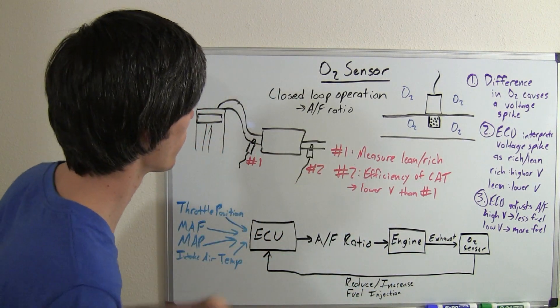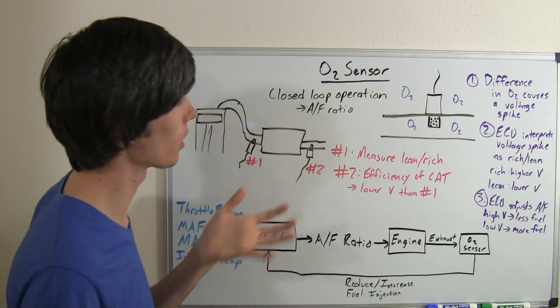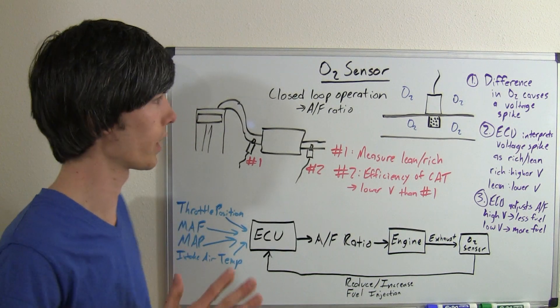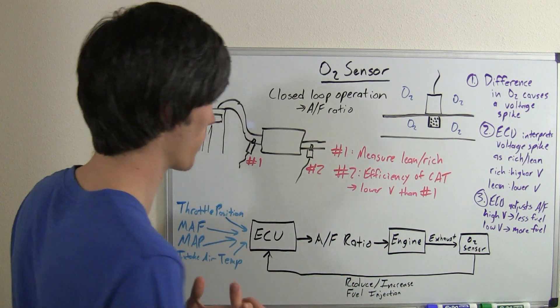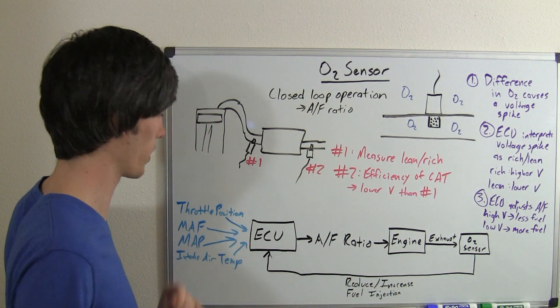An oxygen sensor is used in order to create a closed loop operation for the air-fuel ratio. What I mean by a closed loop operation is that you check to make sure that you're using the right air-fuel ratio.